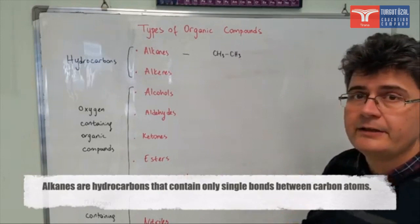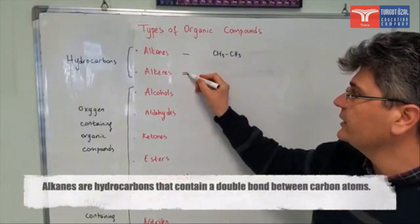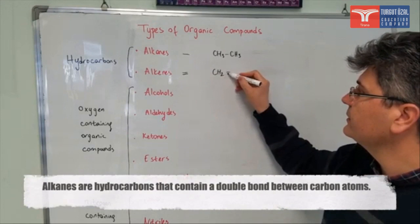However in alkenes we do have a double bond as a functional group. So it's going to be CH2 double bond CH2.